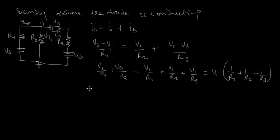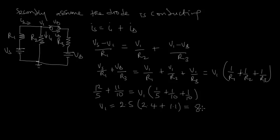So substituting the values, Vs is 12 over 5 plus Vb is 11 over 10. It's equal to V1 into 1 over 5 plus 1 over 10 plus 1 over 10. And that will give us V1 is equal to 2.5 into 2.4 plus 1.1, which is equal to 8.75 volts.